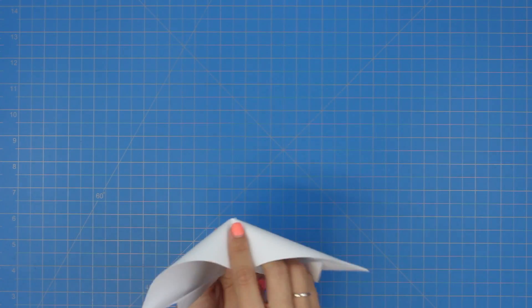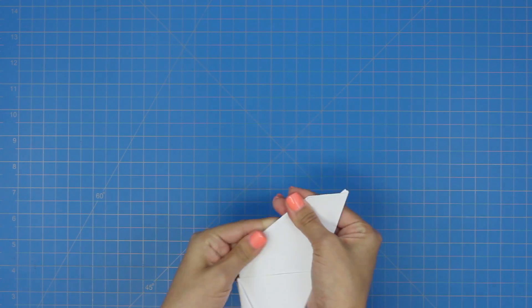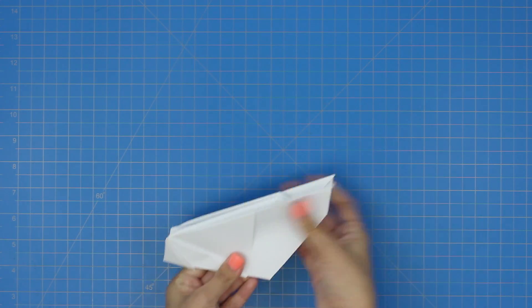Next, you're going to take the plane and invert fold the tail end in like this. And it should look like this.